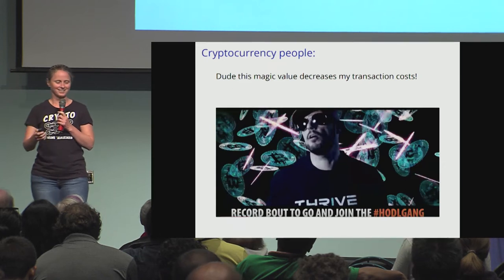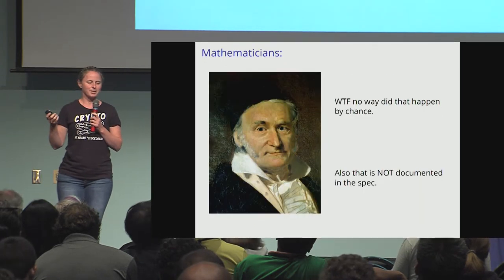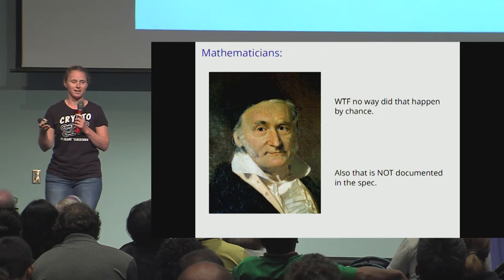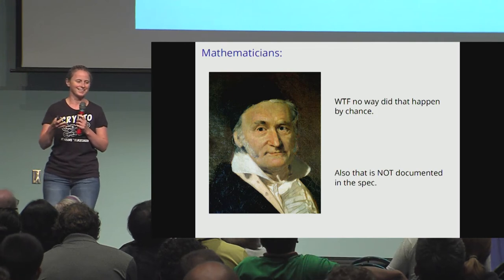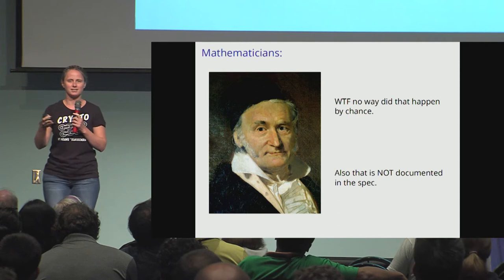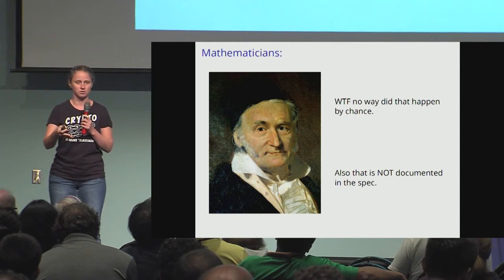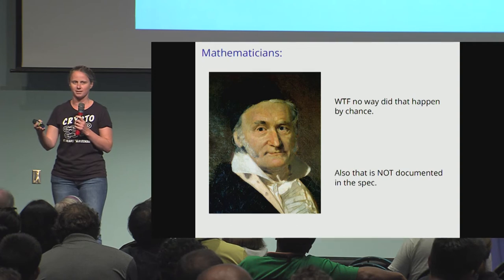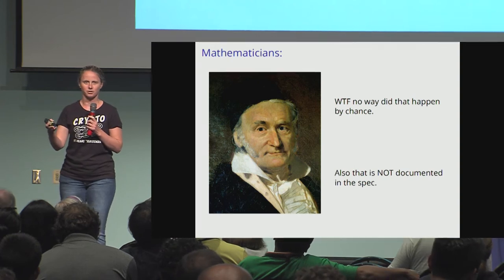Every time I give a talk to a room full of mathematicians about this, they're like: wait, what? This makes no sense. How is this even happening? There's no way that this is random. But also, this is not documented in the specification for these curves.